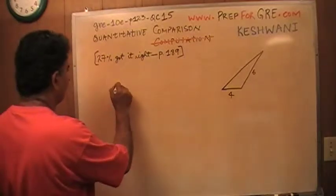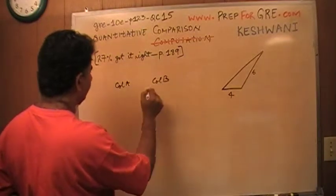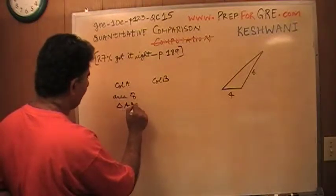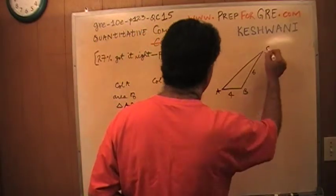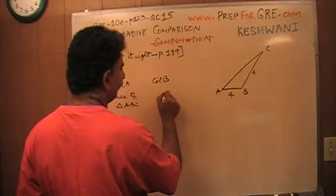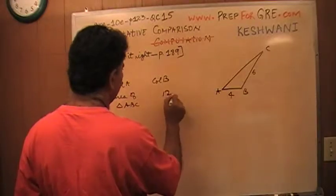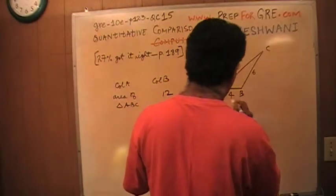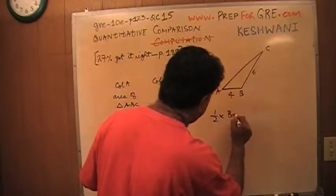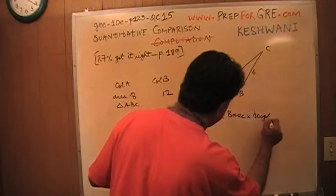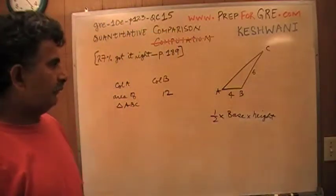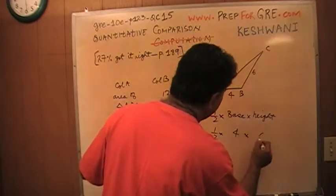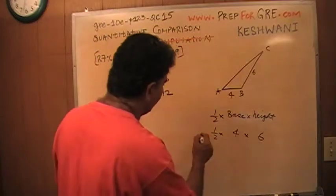Here's your triangle. What I want you to compare, forget about this question for a second. Let's do something different here. What I want you to compare in column A and column B is area of triangle ABC, let's call it ABC, versus 12. So how do you find the area of triangle? Area of triangle is half base times height. And therefore, one half base, which is four, times height, six. Six times four is 24 and half of that is 12.